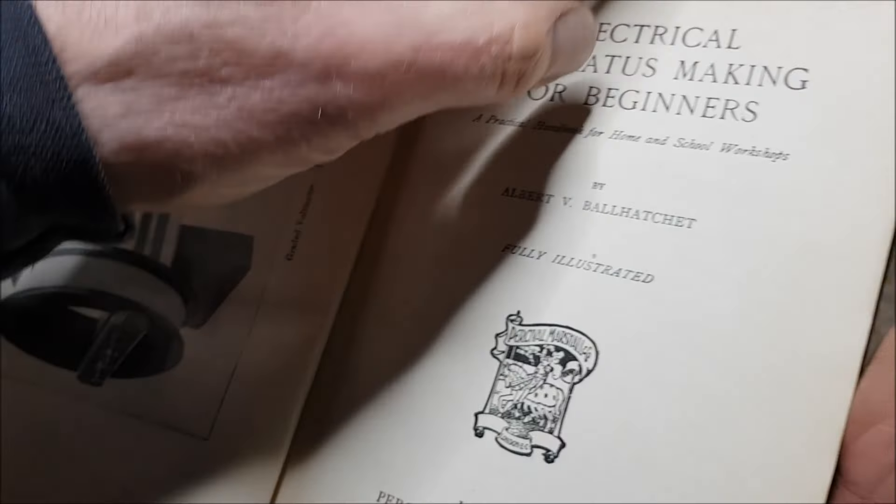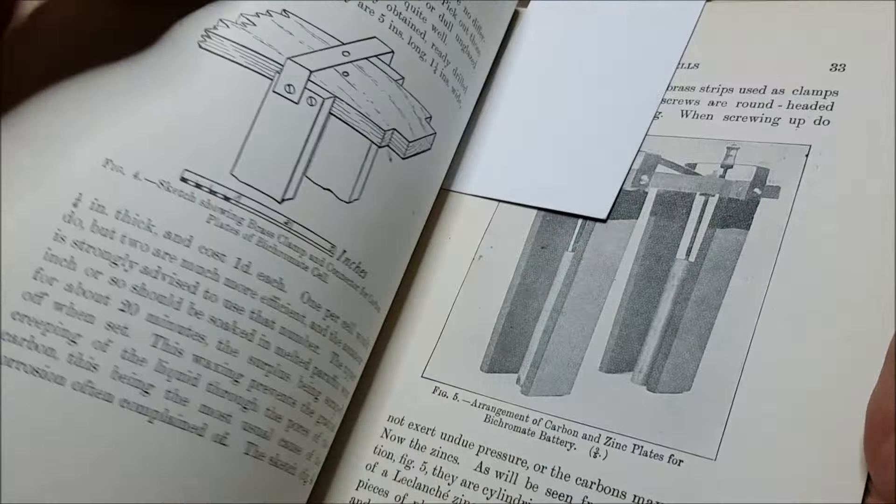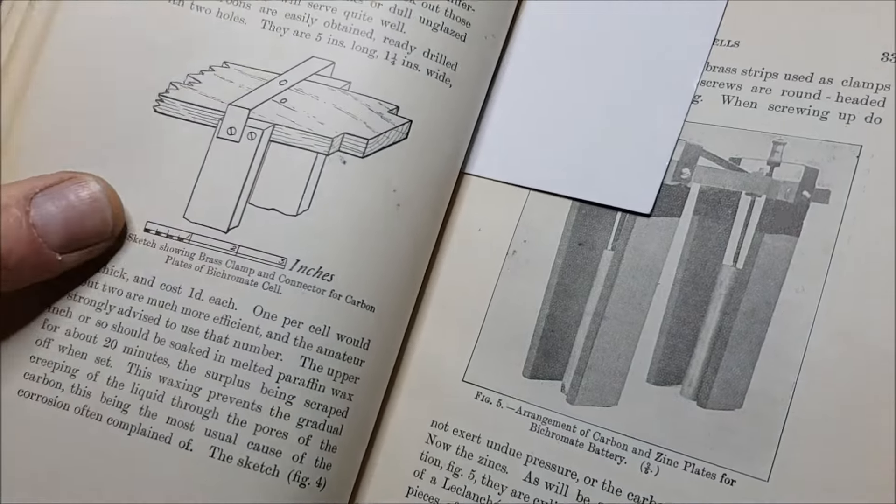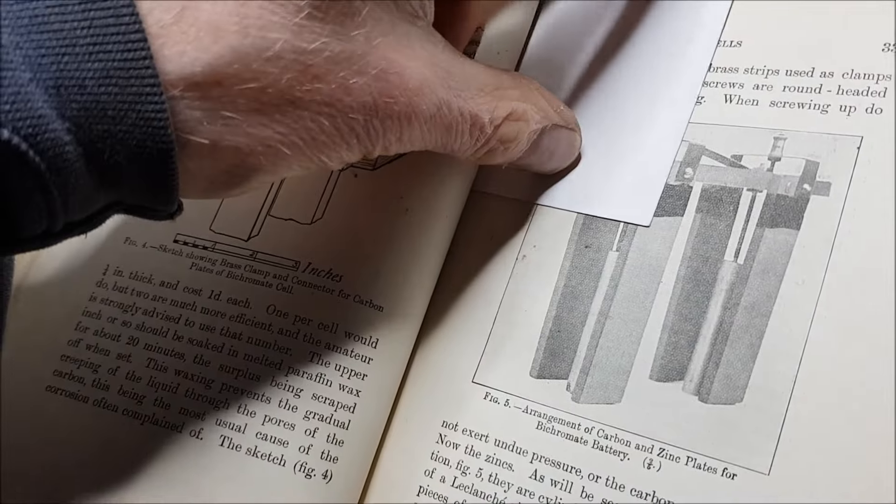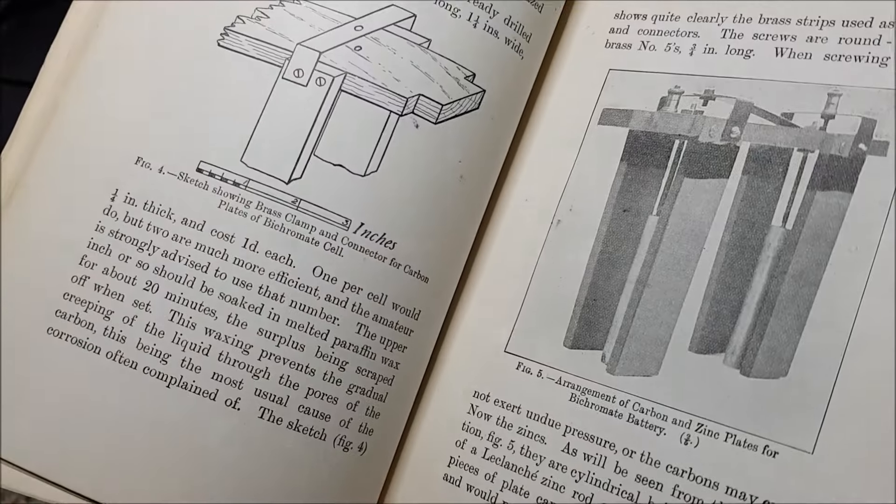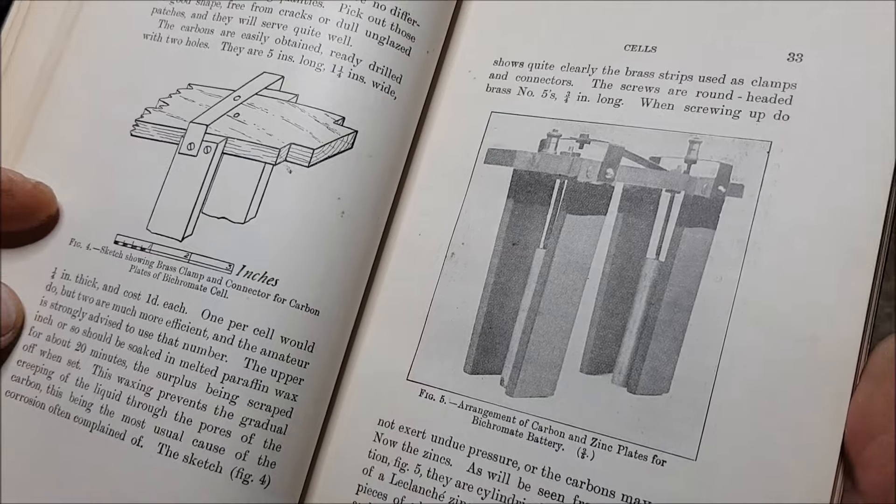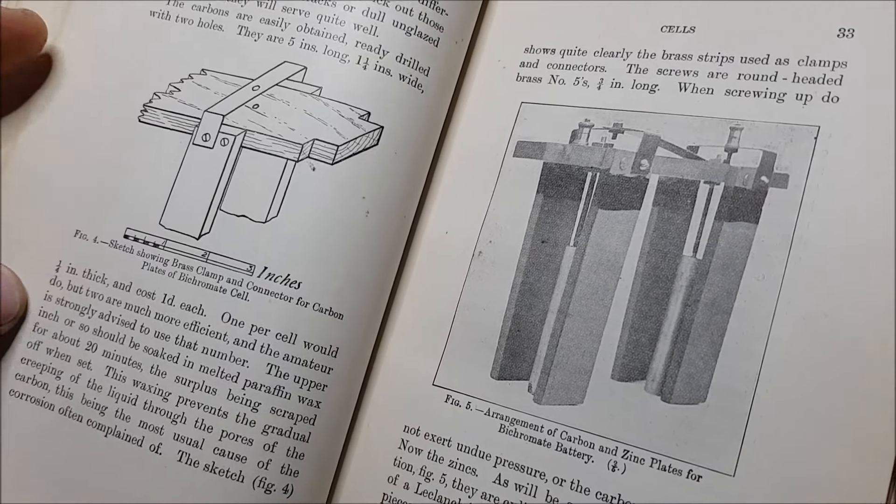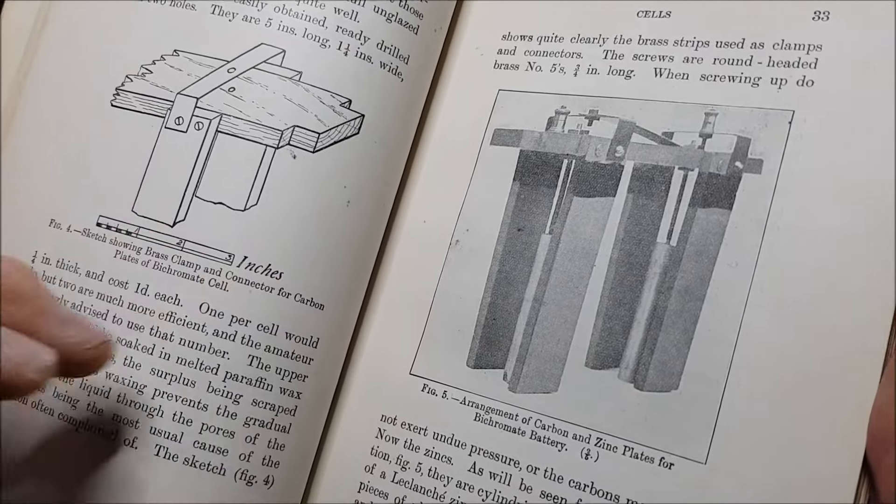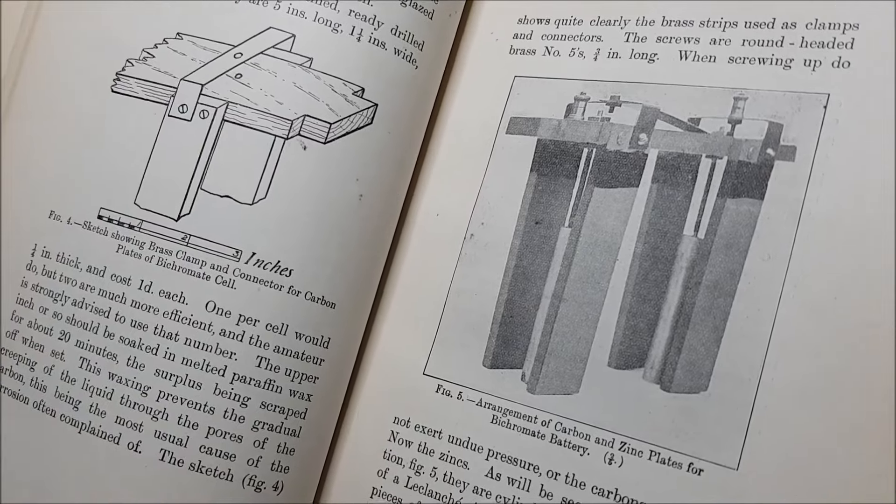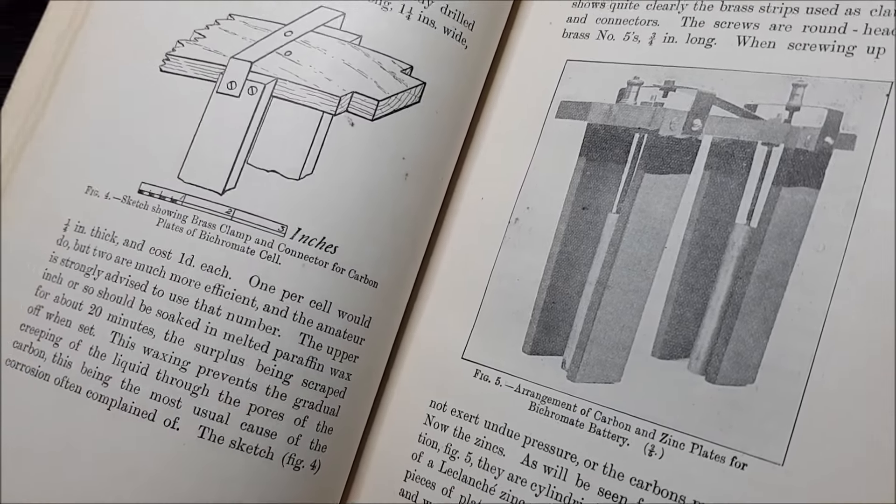He describes how for school children and the keen amateur to make your own zinc bichromate batteries using concentrated sulfuric acid, and coating the plates with mercury, which obviously was freely available from chemists back in 1916. Not really recommended under health and safety guidelines these days.